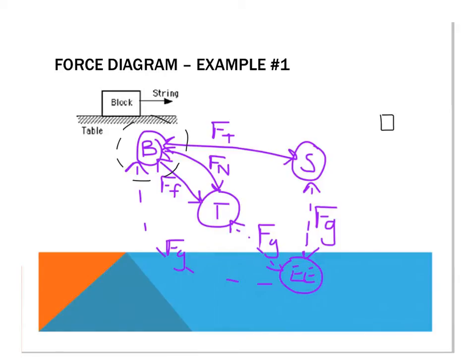Then we're going to draw each of the forces. The new thing that a force diagram is adding is you can show direction more easily. We've got four forces that are coming into and out of the block, meaning the block has four interactions that we will need to show on the force diagram. We'll take them one at a time and think about the direction that those forces will be acting.